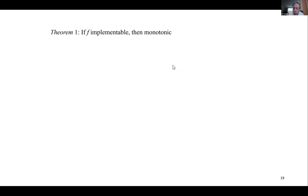There are going to be two theorems. The first will be easy to prove: if a social choice rule is implementable, then it must be monotonic — so monotonicity is a necessary condition. In theorem two, we'll see that monotonicity is almost a sufficient condition too. We need an additional requirement, but that requirement is quite weak. So monotonicity is necessary and almost sufficient for implementability.